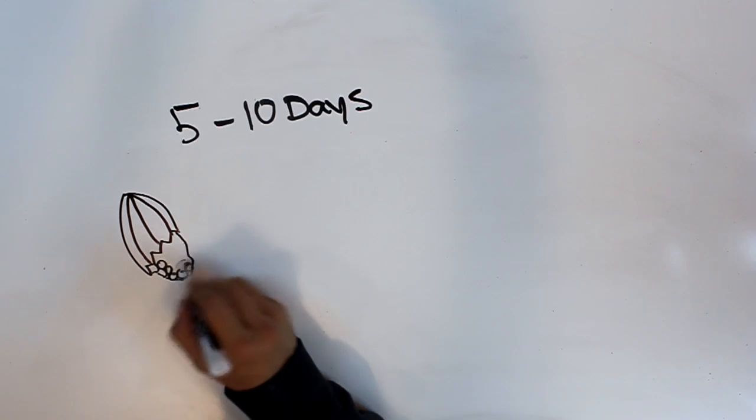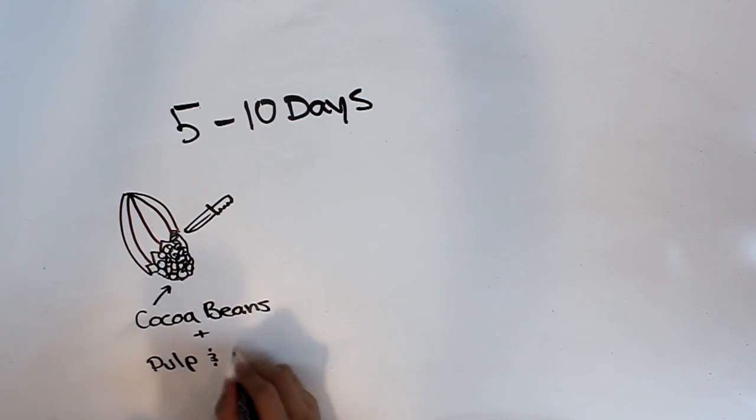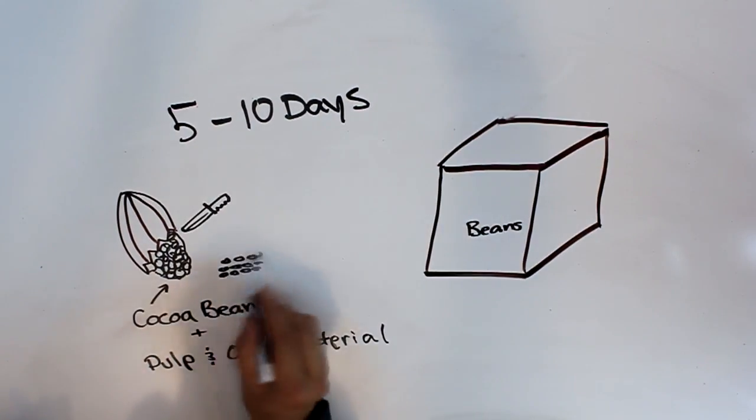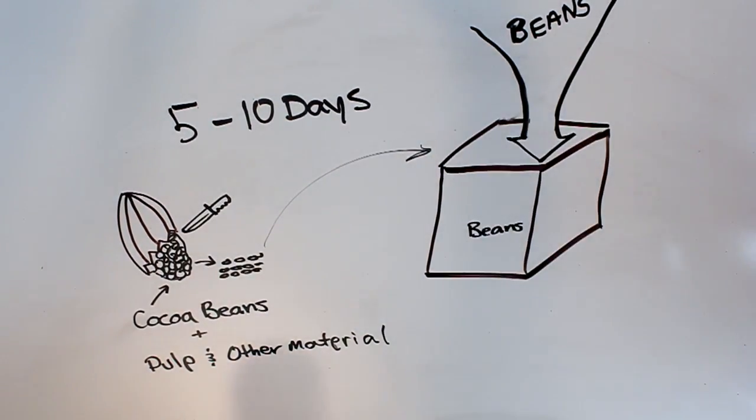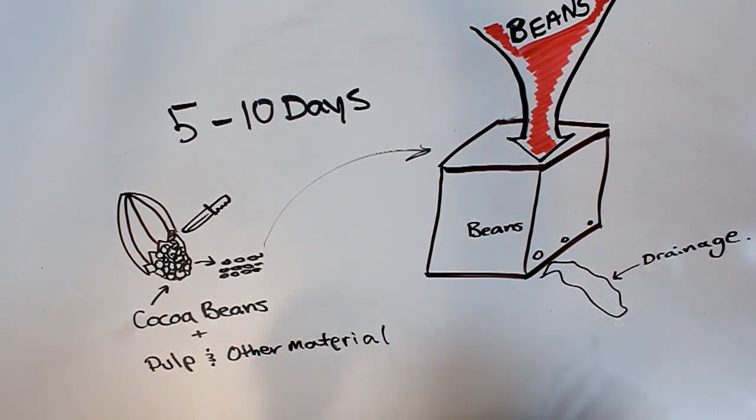The fermentation process is quite simple and pretty quick. It takes about 5 to 10 days. The pods are harvested and cracked open all by hand. Inside the cocoa pods are the cocoa beans surrounded by the pulp and other organic materials. All the beans that are harvested are loaded into closed wooden boxes with small openings to allow for drainage and aeration.